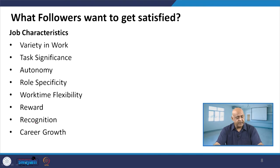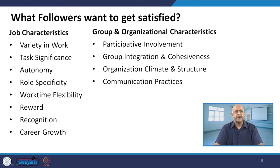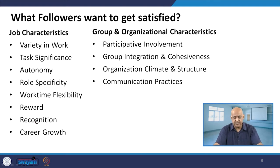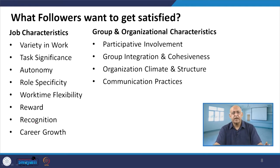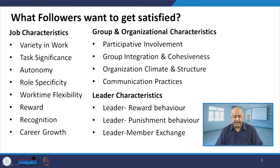What followers want to get satisfied: variety in work, task significance, autonomy, role specificity, work time flexibility, reward, recognition, and career growth. These are the normal job characteristics where the individual wants to get satisfaction. With the period of time, organizations are moving more towards service organizations, and group and organizational characteristics are increasing — activities are not only individual based, whether you take hospitals, hotels, or IT industries, and even in manufacturing now. Whenever we talk about group and organizational characteristics, the environment is important: participative involvement, group integration and cohesiveness, organizational climate and structure, and communication practices.